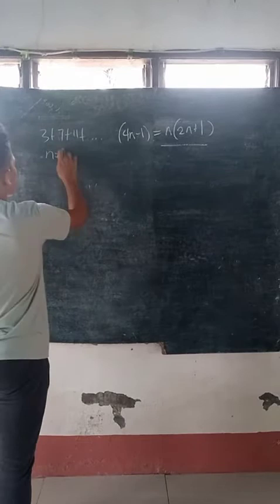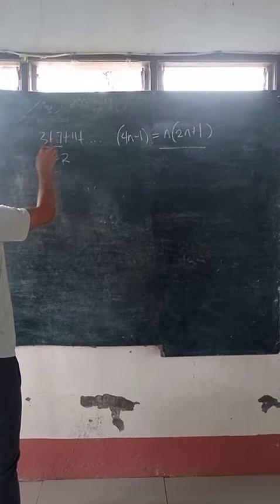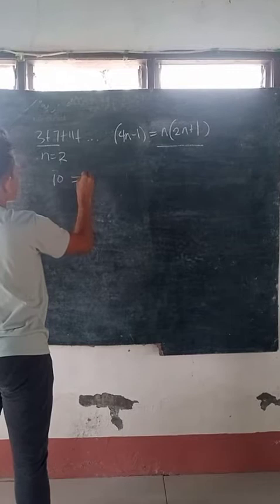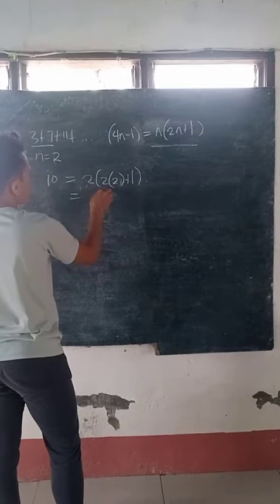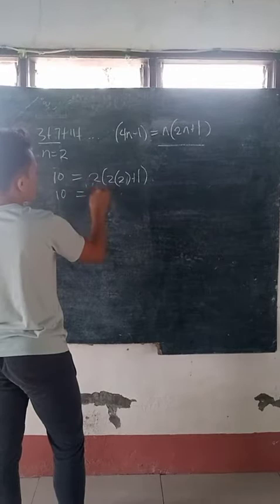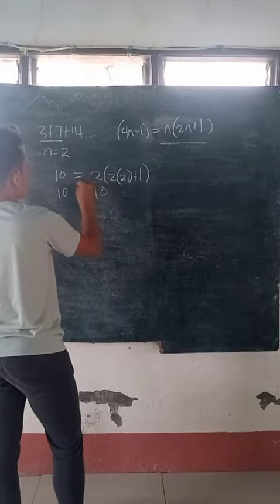So our second term is n equals 2. So 3 plus 7 is equal to 10. So 2 times 2 times 2 plus 1: 2 times 2 is 4, plus 1 is 5. So 5 times 2 is equal to 10. So it is true.